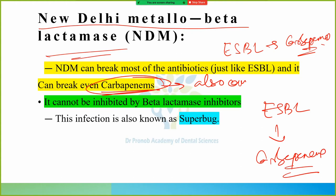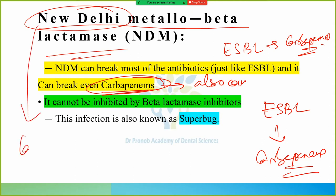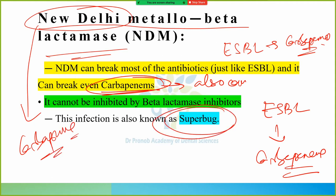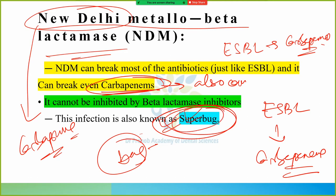New Delhi Metallo-beta-lactamase — why is it called New Delhi? Because it was found in New Delhi. In front of New Delhi metallo-beta-lactamase, carbapenem also fails. That's why this infection is also known as a 'super bug.' NDM is known as super bug.